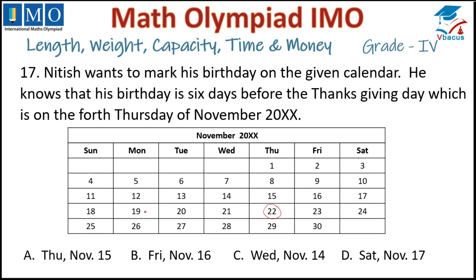Counting 6 days backwards from the 22nd: 1, 2, 3, 4, 5, 6 — we go back 6 days. It falls on the 16th, which is a Friday. So Friday, November 16 is the correct option. Tick option B.